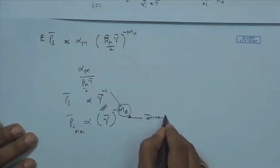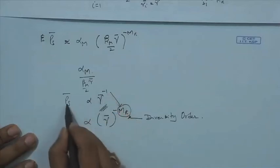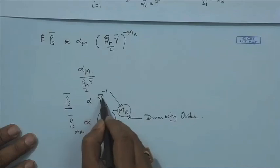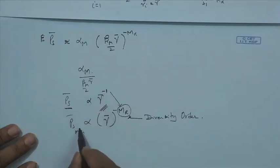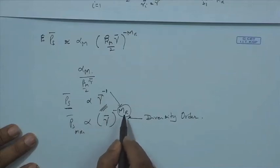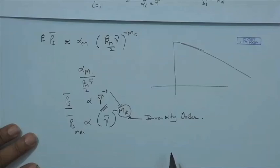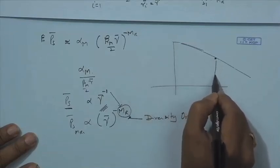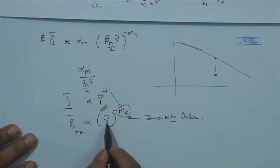This exponent MR is known as the diversity order. In summary, because of MRC combining, the probability of error — previously inversely proportional to the average SNR — is now inversely proportional to the average SNR raised to the power of MR (number of receive antennas). In the log-log scale the probability of error at a certain SNR would be much lower, dictated by this term. More details on this expression, coding gain, and diversity gain will be covered in the following lecture.